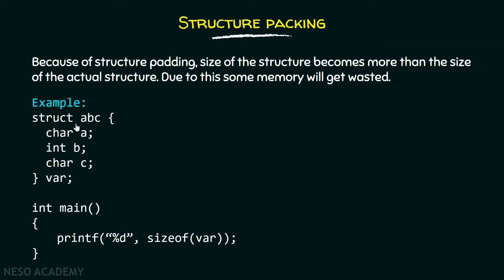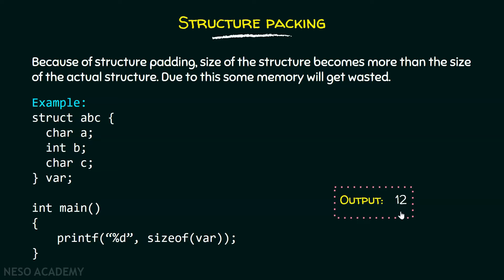For example, if we have the struct ABC and it consists of three members — character A, integer B, and character C — the actual size of this structure should be 6 bytes. Because if we assume that a character will take one byte of memory and an integer will take 4 bytes, then total size will be 6 bytes. But the size we are getting is 12, because of structure padding — a lot of memory is wasted.